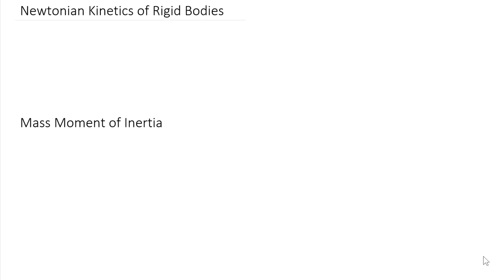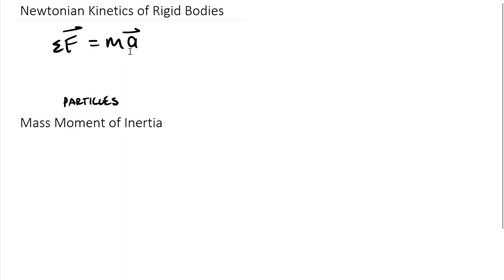This is a topic we've talked about before, but not for rigid bodies — for particles. Remembering back to our Newtonian kinetics for particles, we used the following equation. Based upon Newton's second law, the sum of forces as a vector equals mass times acceleration. We didn't need to worry about which acceleration — it was just the acceleration of the particle, and accelerations didn't vary by location since all mass was condensed to one point.